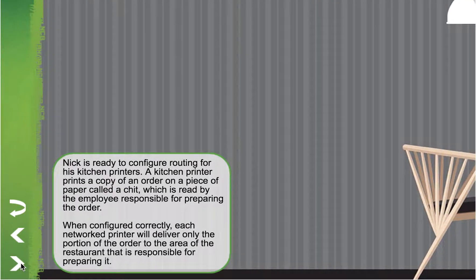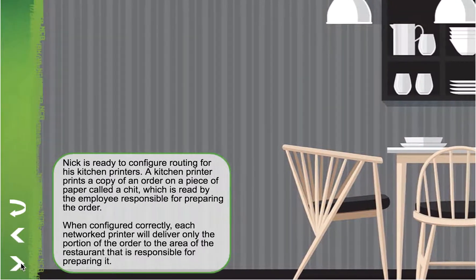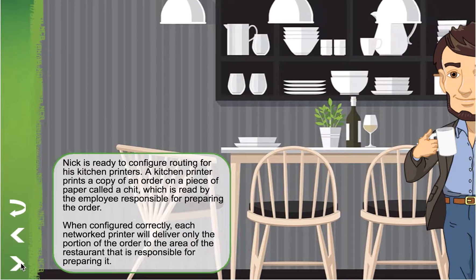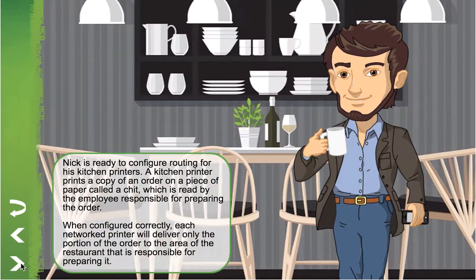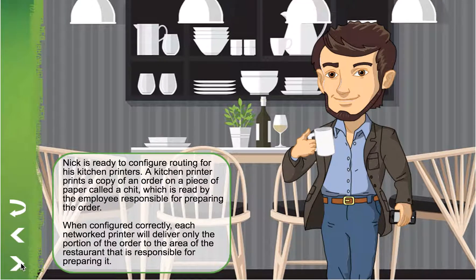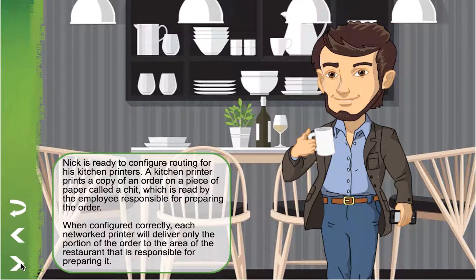Nick is ready to configure routing for his kitchen printers. A kitchen printer prints a copy of an order on a piece of paper called a chit, which is read by the employee responsible for preparing the order. When configured correctly, each networked printer will deliver only the portion of the order to the area of the restaurant that is responsible for preparing it.